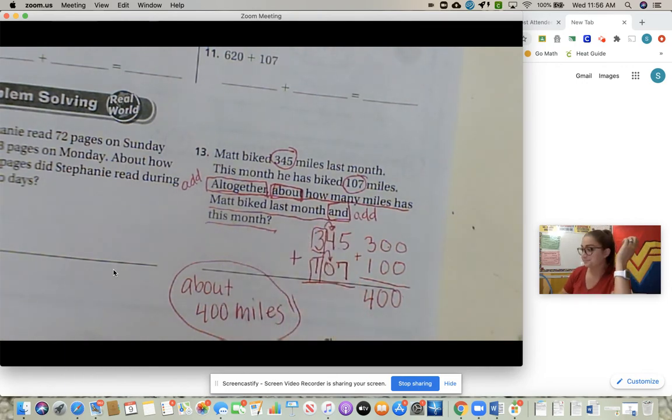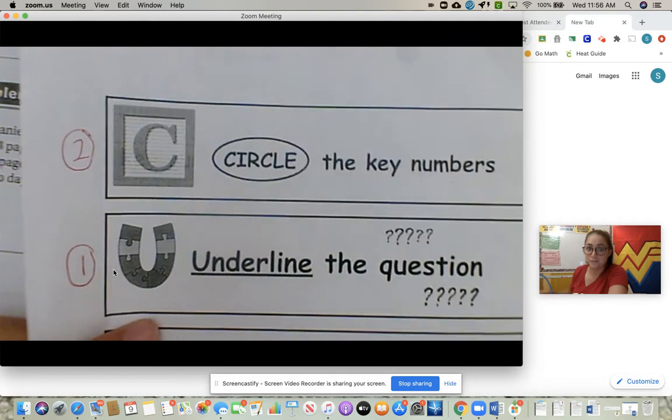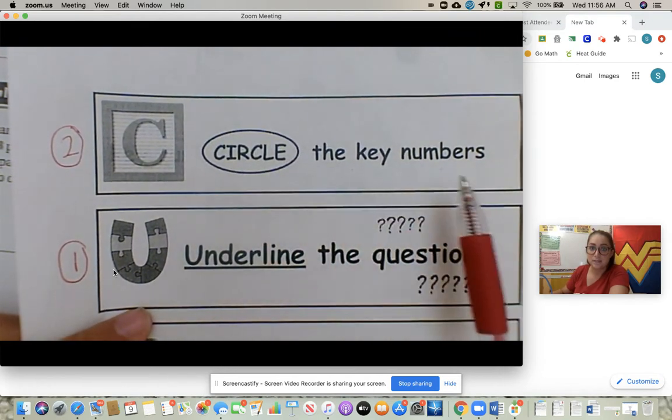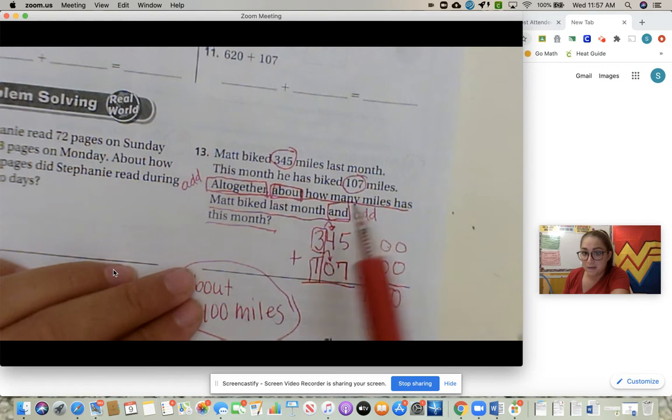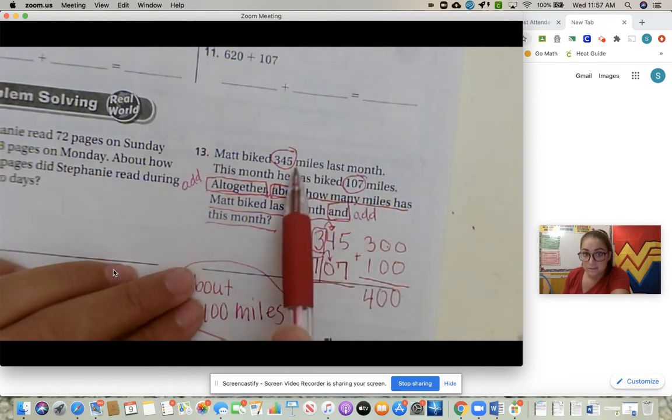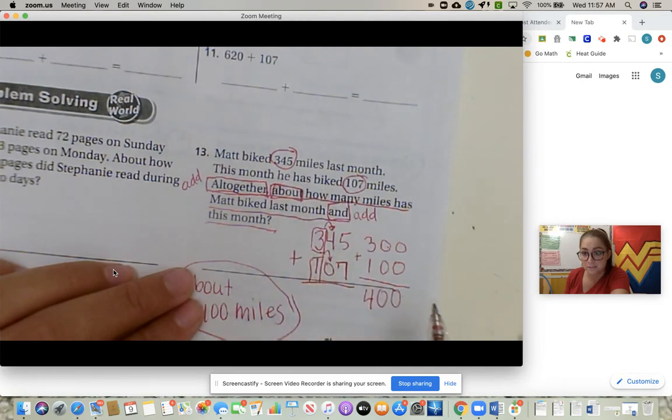Then I jump back up to C, circle the key numbers. We're talking about miles biked. So here's miles, here's miles. So these two I'm going to circle: 345, 107.